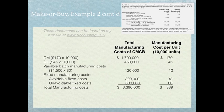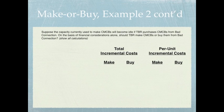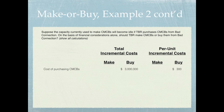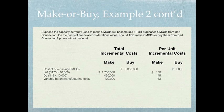Now suppose the capacity currently used to make CMCBs will become idle if TBR purchases CMCBs from Bad Connection. On the basis of financial considerations alone, should TBR make CMCBs or buy them? In a make or buy decision, we first ask how much it costs to buy — in this case, 10,000 units at $300 each is $3,000,000. If we make them, we have those same manufacturing costs from the prior problem.